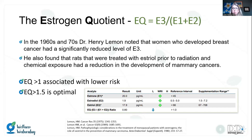Let's talk about the estrogen quotient. Dr. Henry Lemon was one of the pioneers working in integrative medicine in the 1960s, and he noticed that women who develop breast cancer had significantly lower levels of estriol, or E3. He came up with the estrogen quotient calculation, which measures how much estriol a woman has compared to the sum of estradiol and estrone — the more proliferative types of estrogen. Women with higher estriol levels had less incidence of breast cancer. An estrogen quotient greater than one is associated with lower risk; the optimal value is over 1.5.